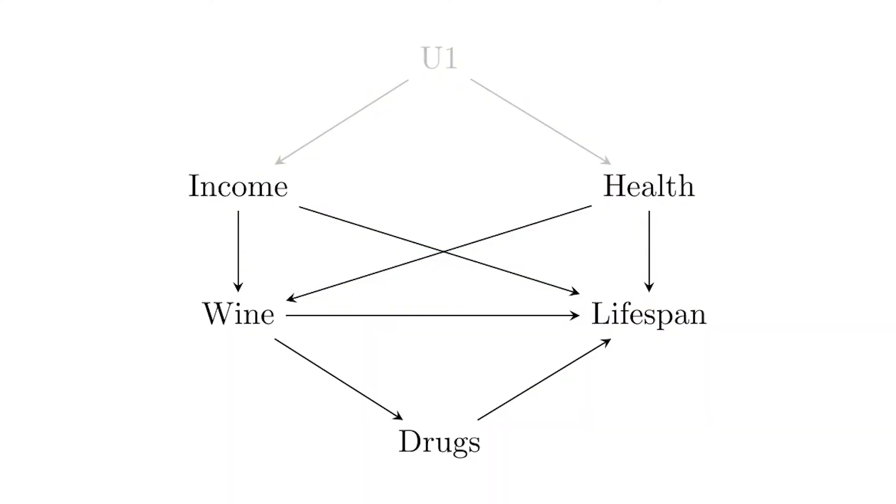So what can we do once we fail the placebo test — which we almost certainly will here? There's probably going to be a remaining relationship between income and drugs even after controlling for wine. We knew before we started that something was going to be left out, so it's not a huge surprise. In causal inference, the goal is not to get assumptions that are 100% correct — that's impossible. The goal is to make assumptions that are close enough that they don't mess us up too much.